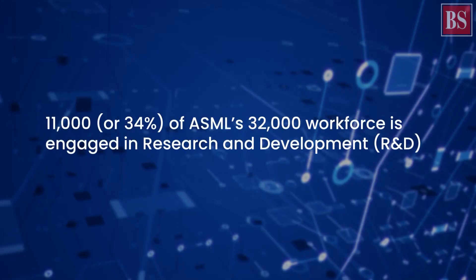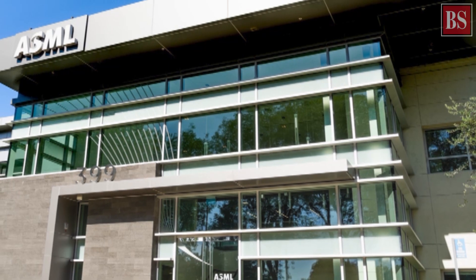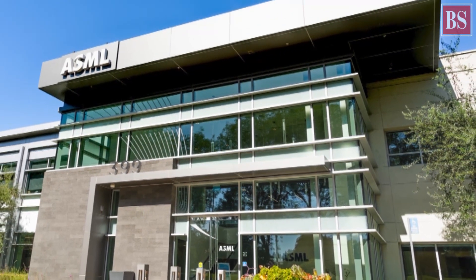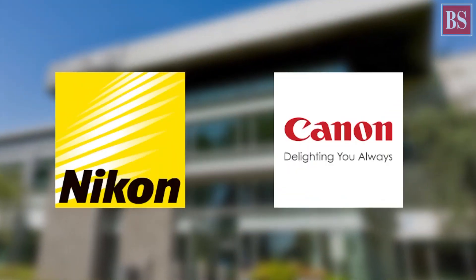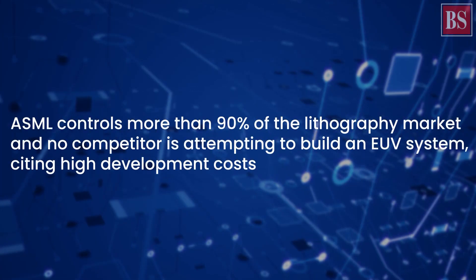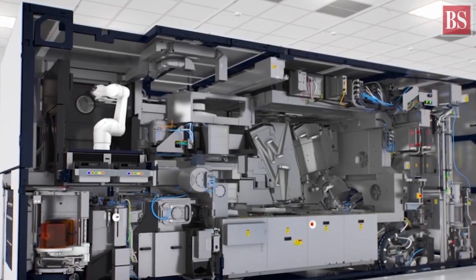11,000 of its 32,000-strong workforce is engaged in research and development. Since 2000, ASML has rapidly taken market share from Japanese competitors like Nikon and Canon, which now mainly focus on older technology. ASML controls more than 90% of the lithography market and no competitor is attempting to build an EUV system, citing higher development costs.